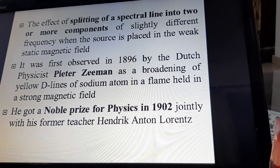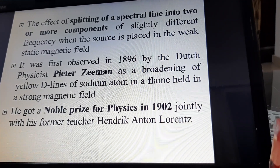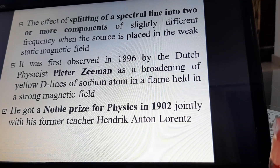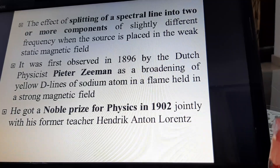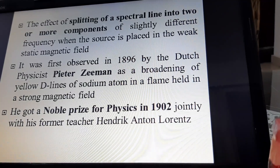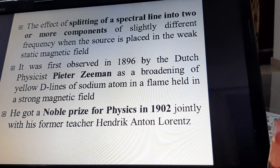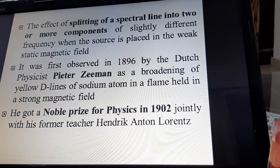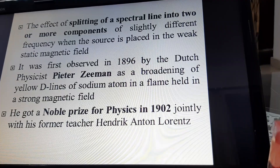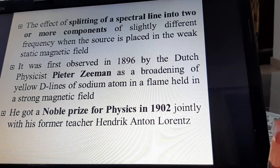He got the Nobel Prize for physics in 1902 jointly with his former teacher Hendrik Anton Lorentz.